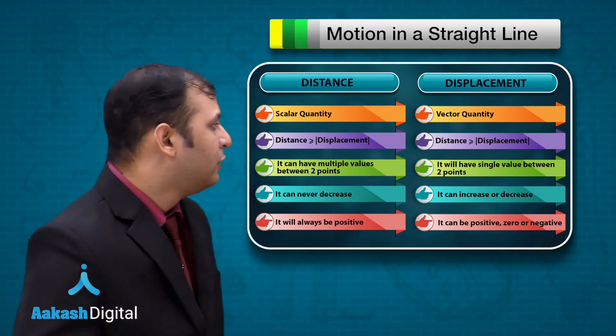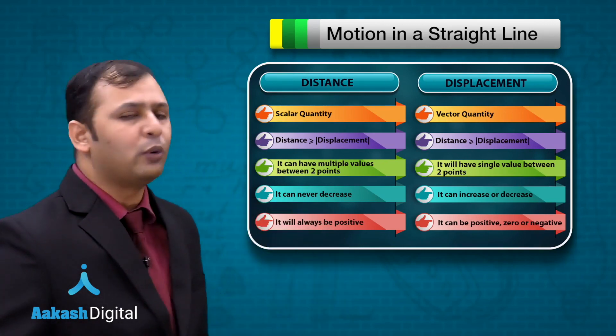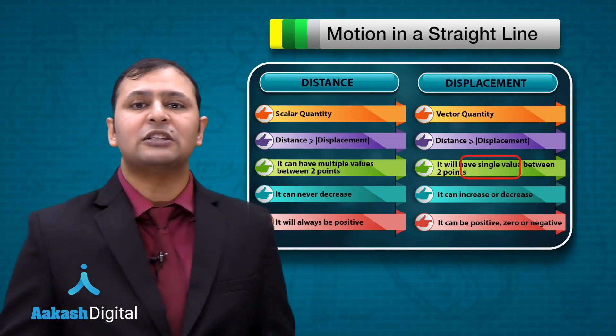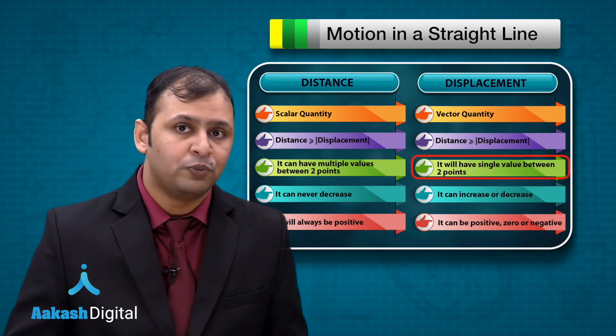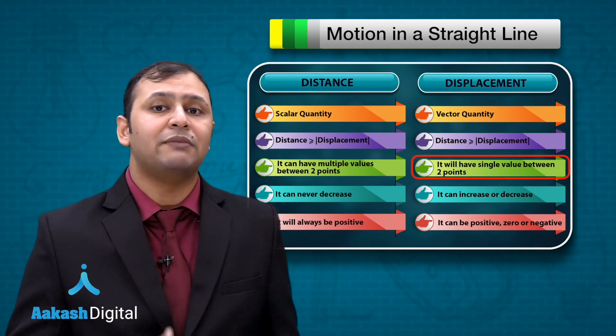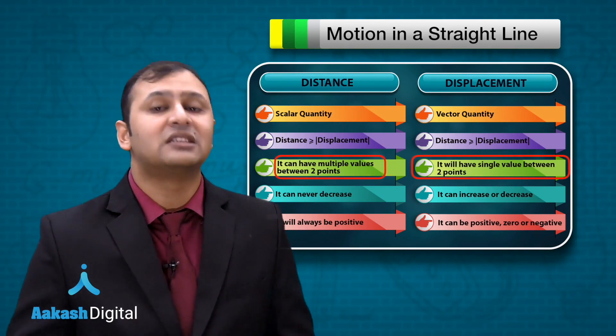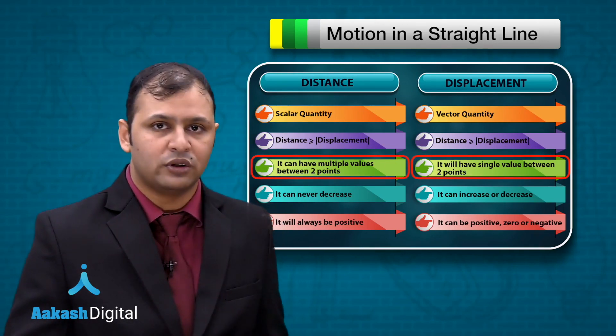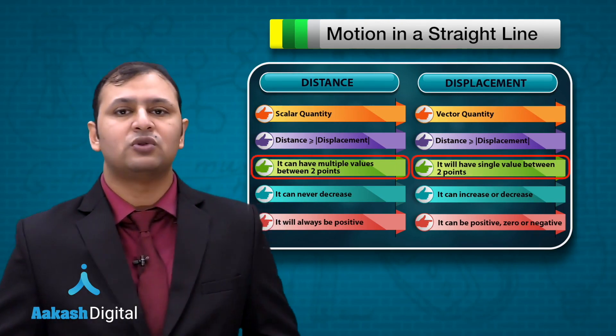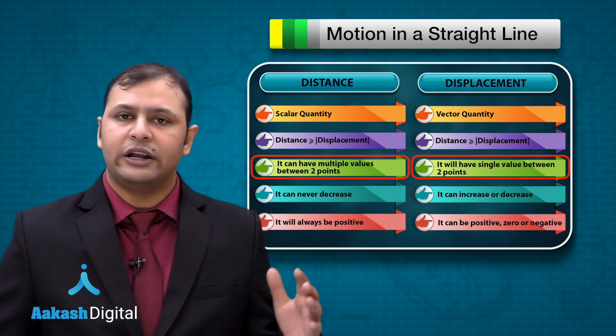Third: between two points, displacement will have a single value but there can be multiple distances, as it depends on the path followed. I hope you have understood these three points.